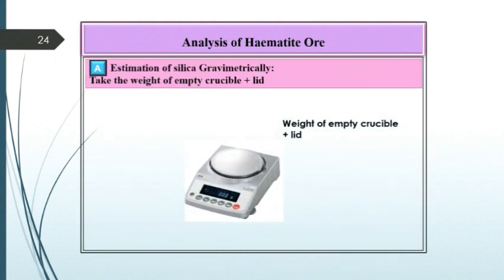For that, take the weight of empty crucible plus lid on a weighing balance. Record this as W1.